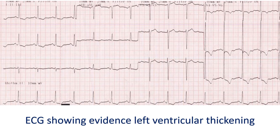Initial tests done in coarctation of aorta include ECG, X-ray of the chest, and echocardiogram. ECG is the electrical recording of the heart, which can show evidence of thickening of the left ventricle in coarctation of aorta. X-ray of the chest can show enlargement of the heart and notching of the ribs. Notching of the ribs occurs due to pressure from the collateral blood flow.